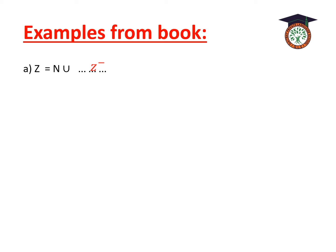Let's see some examples from our book. First: Z equals N union what? Let's revise — union means collecting all elements without repeating. Z is the biggest set, so when we solve this, we think: what else is inside Z besides N? The answer will be Z⁻.